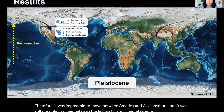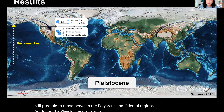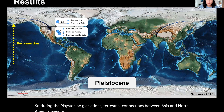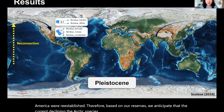During the Pleistocene glaciations, terrestrial connections between Asia and North America were re-established. Therefore, based on our research, we anticipate that the current declining Nearctic species moved during this period when the continents were reconnected.